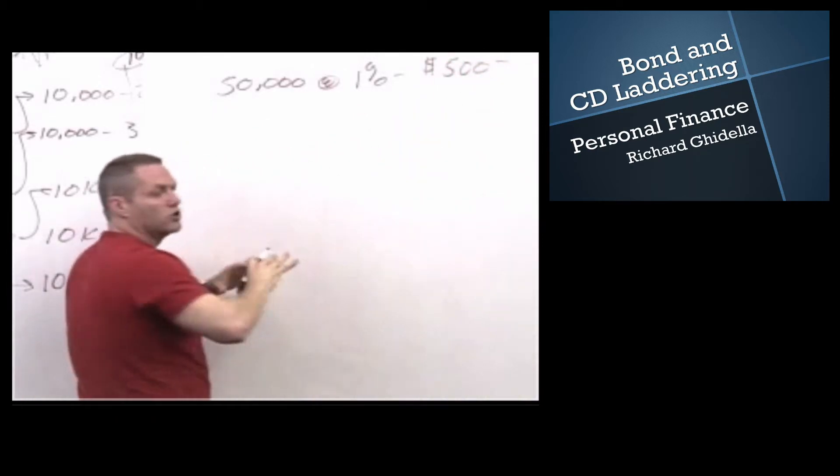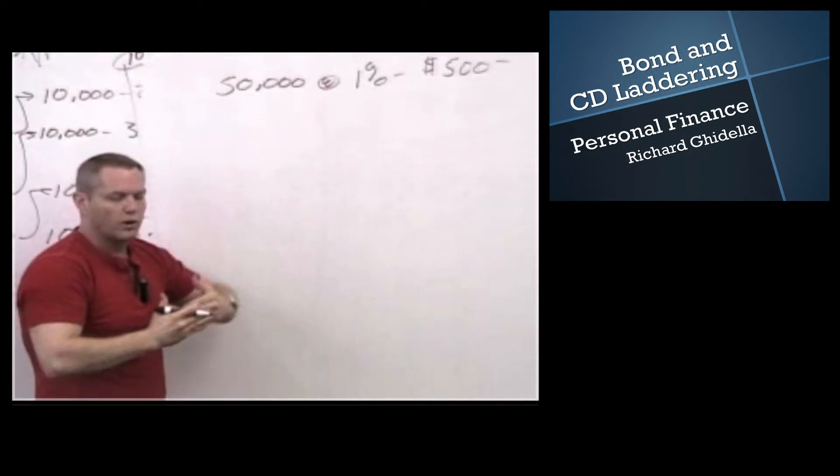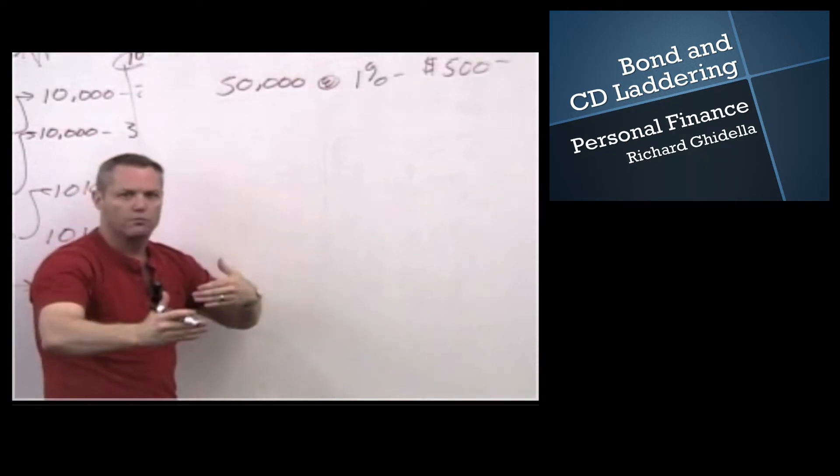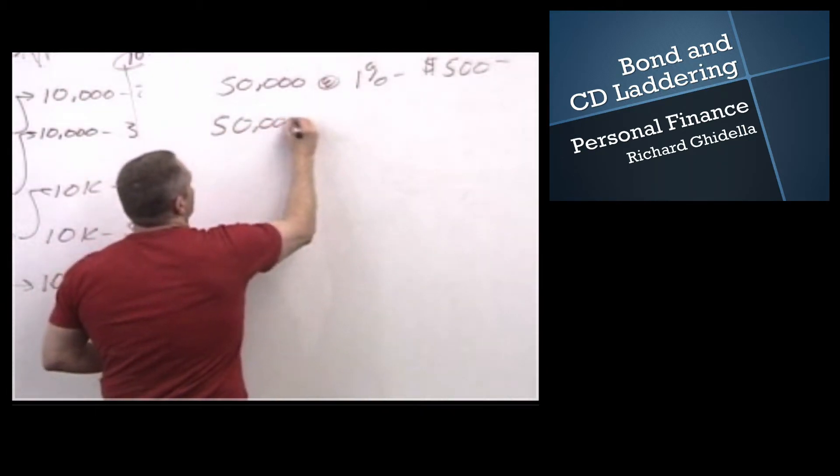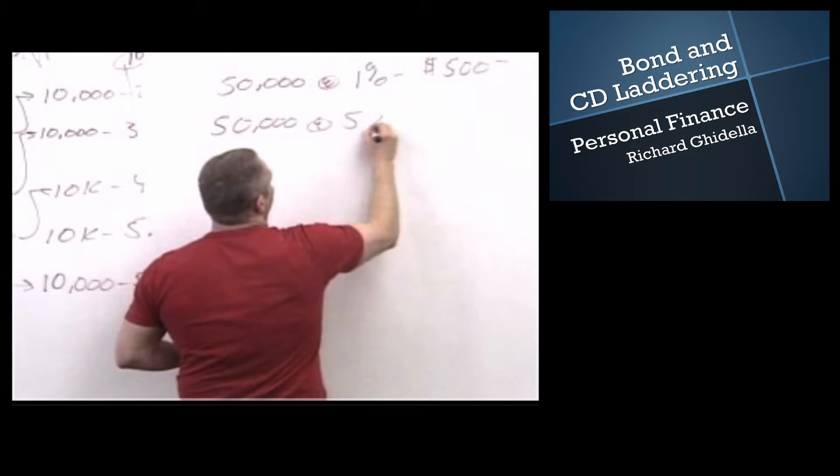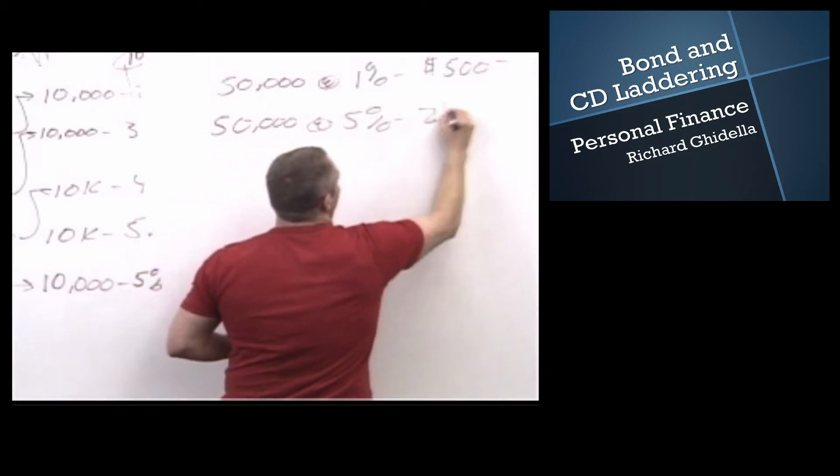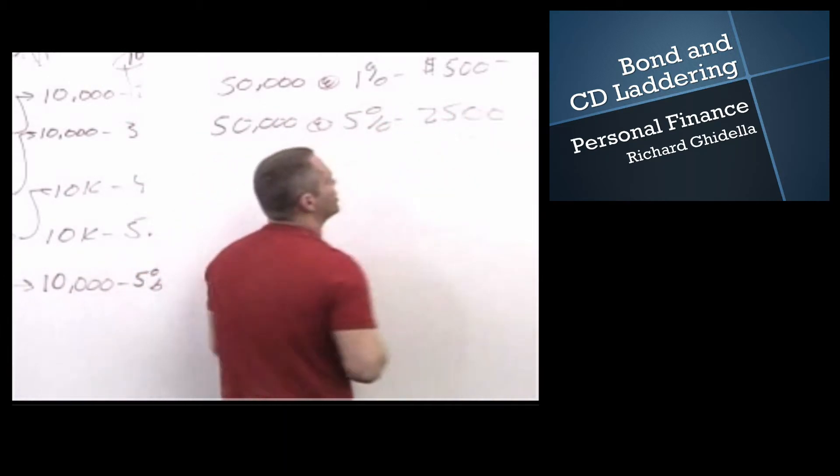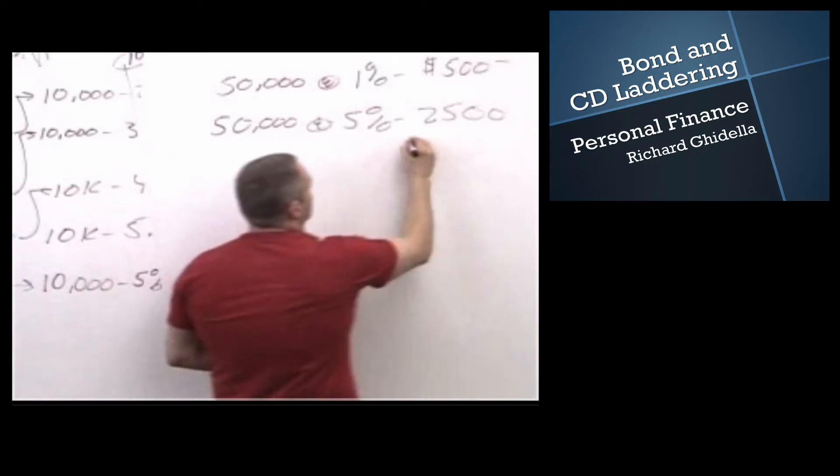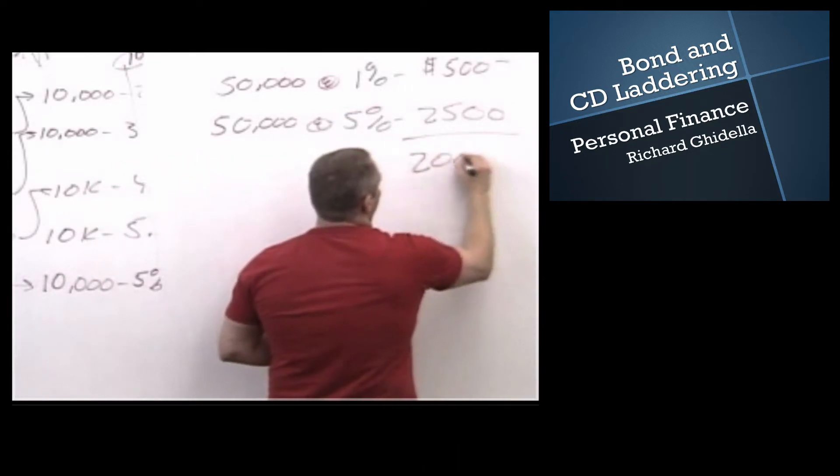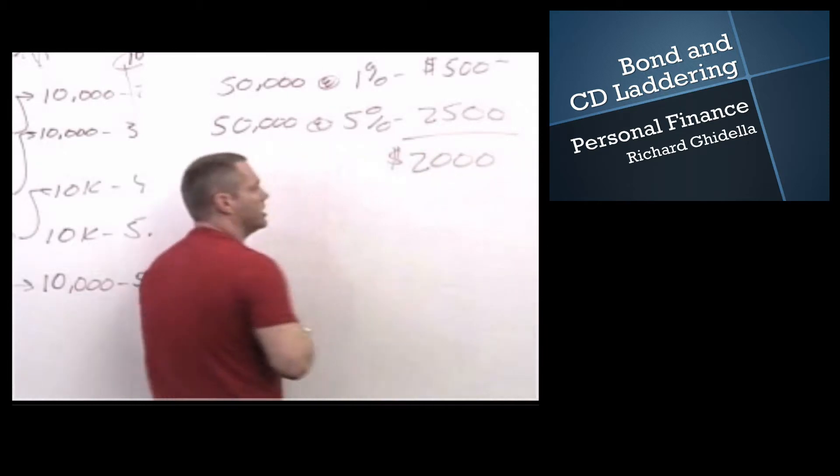If we have $50,000, if we want to keep everything incredibly flexible, we invested all at 1%, 50,000 times 1% is $500. If we do the laddering and we spread this ladder out over time and the ladder builds, then we're going to end up with our $50,000 yielding an average of 5%, which means we're going to get $2,500. So by doing this, we're going to make an extra $2,000 each year.